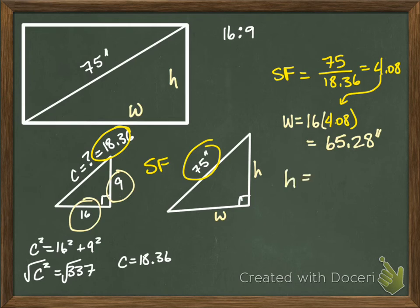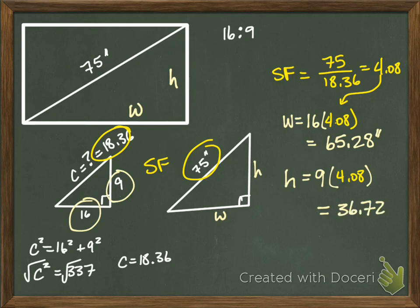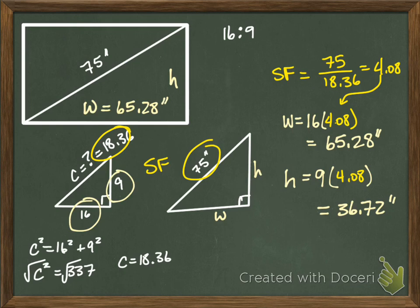And then I do the same for the height. My height is 9 on the smaller triangle, so I'm going to go 9 times 4.08. That gives me 36.72. So my width was 65.28 inches and my height is 36.72. And I'm done. That gives me what I need to know. Now I can tell whether or not the TV is going to fit in my living room.